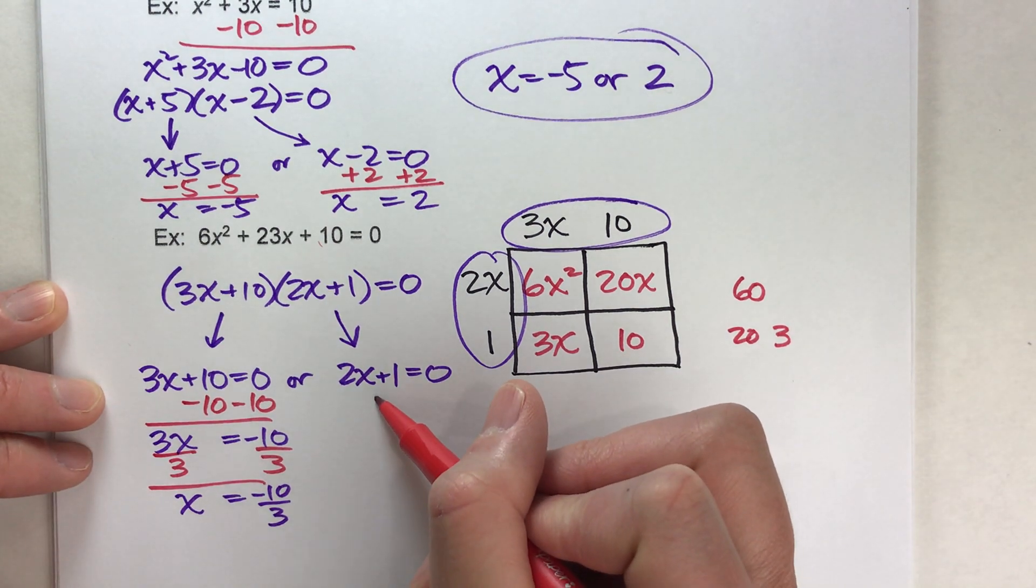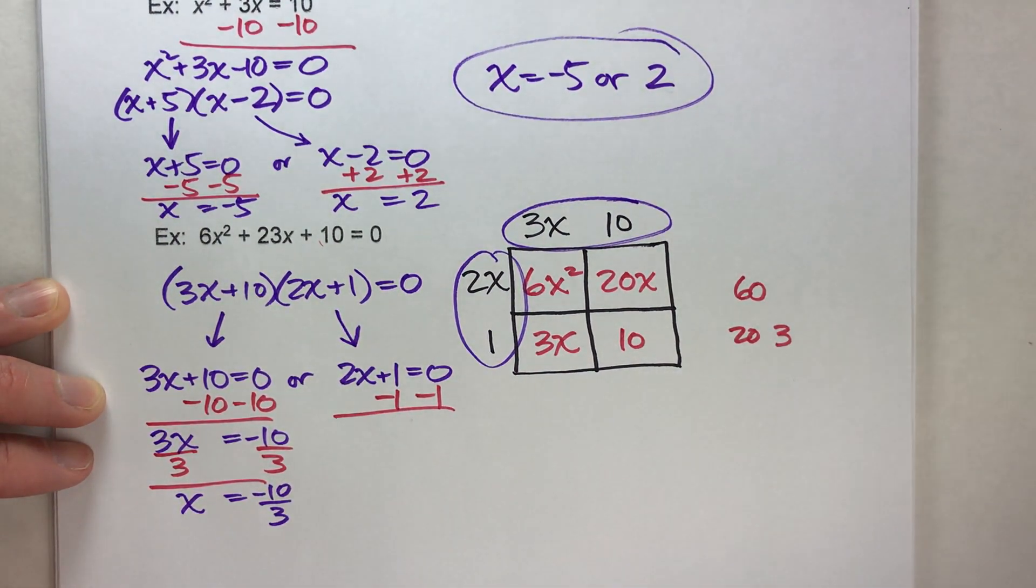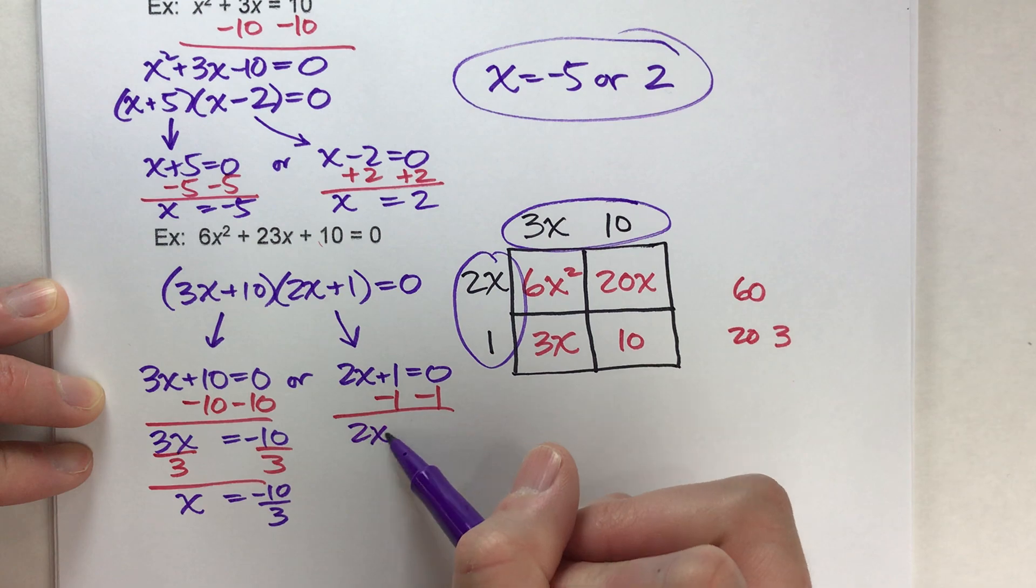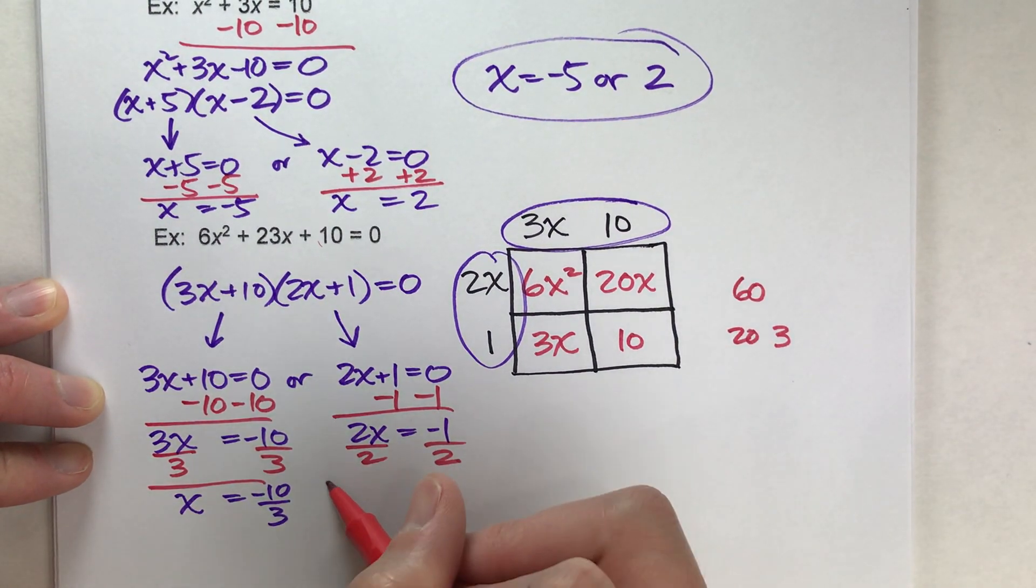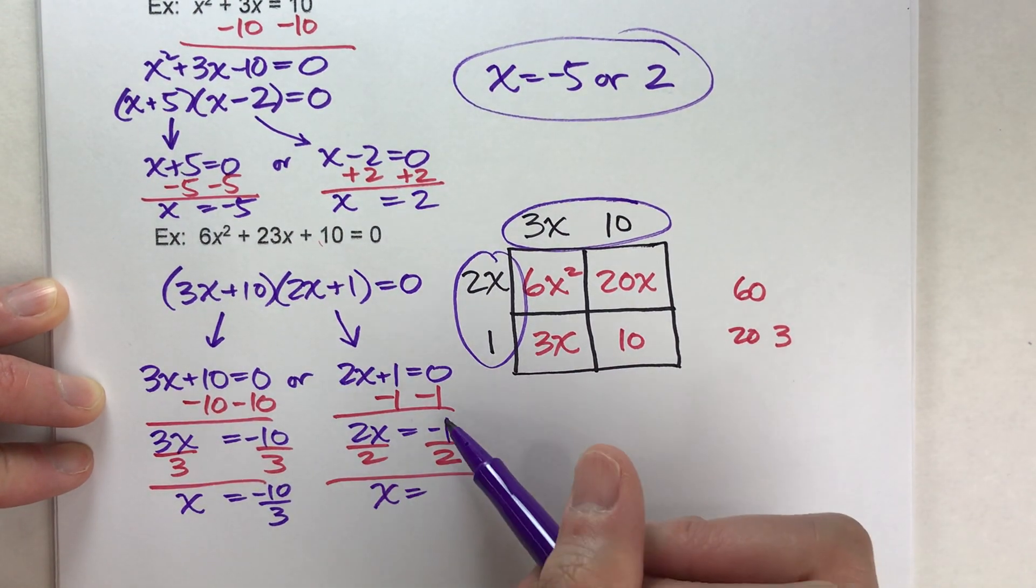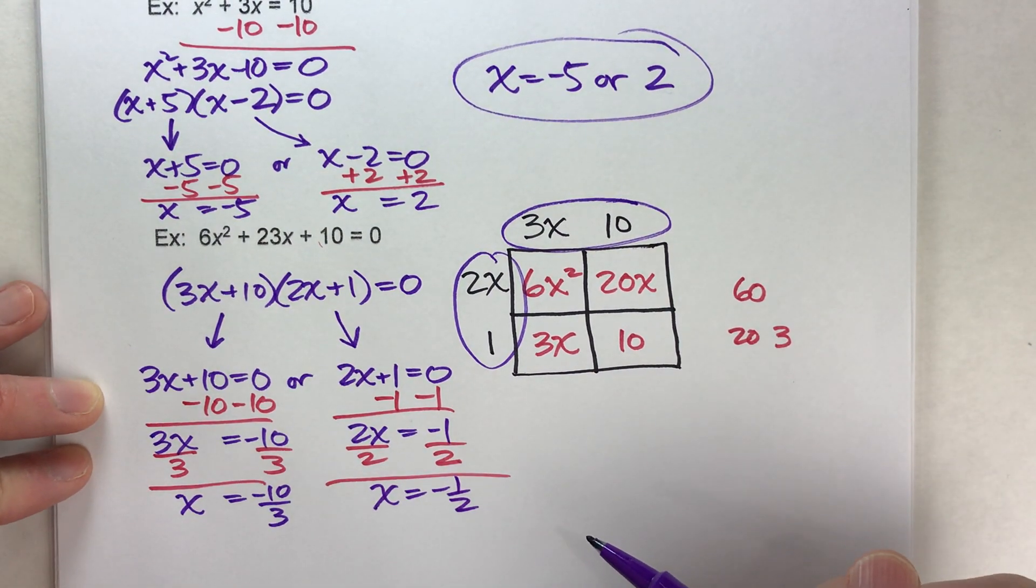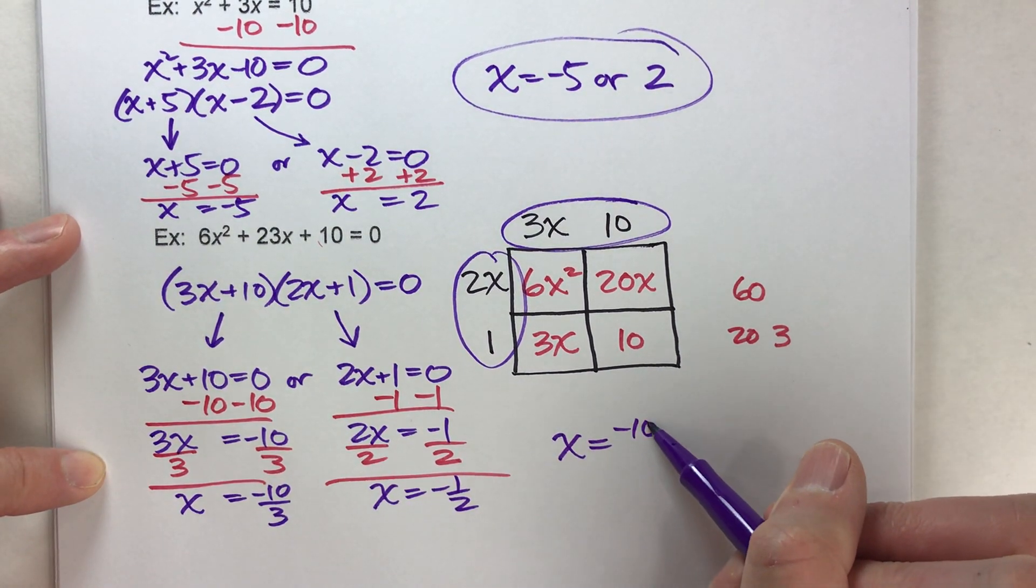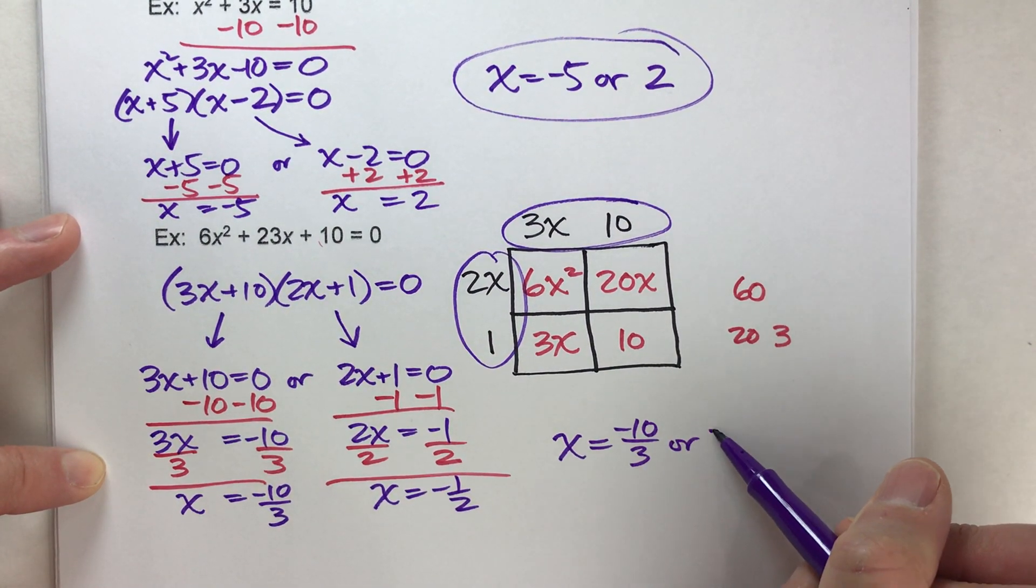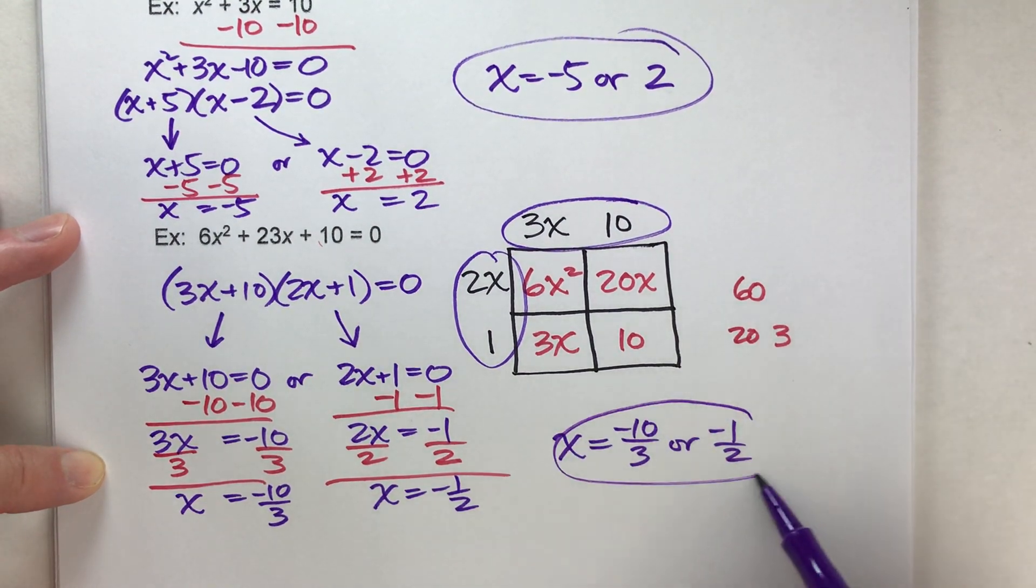Let's do the other one. Subtract 1 on both sides. I get 2x is equal to negative 1. Divide both sides by 2. I end up getting x equals negative 1 half. I just found my two values of x. x has to either be negative 10 thirds or negative 1 half.